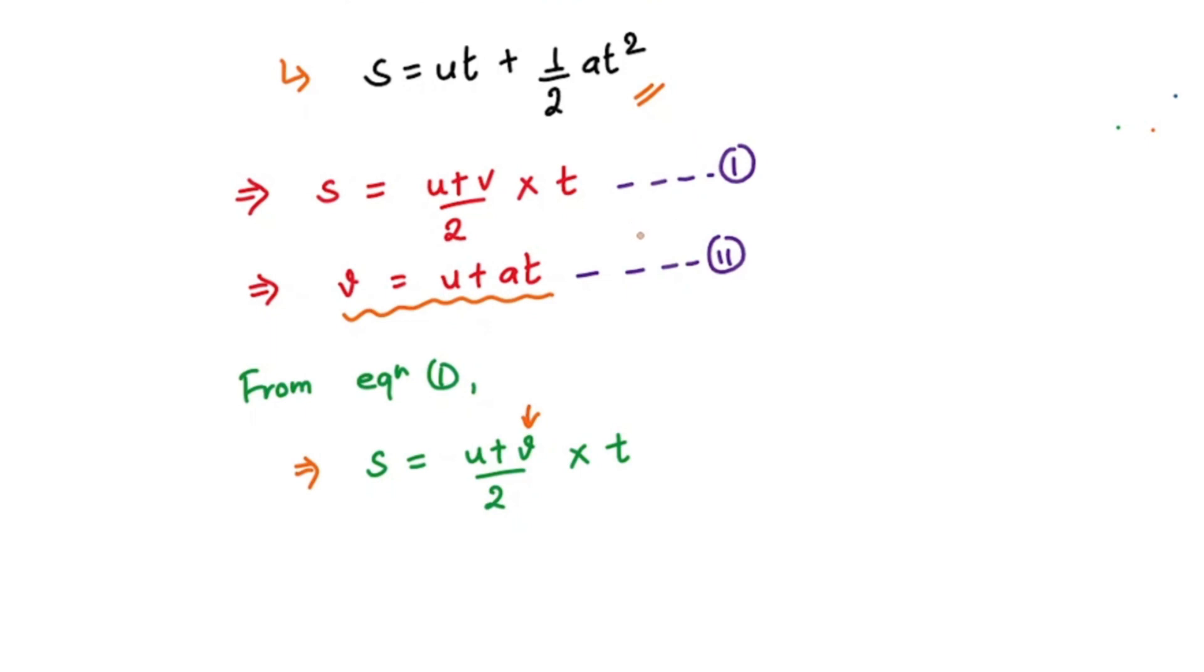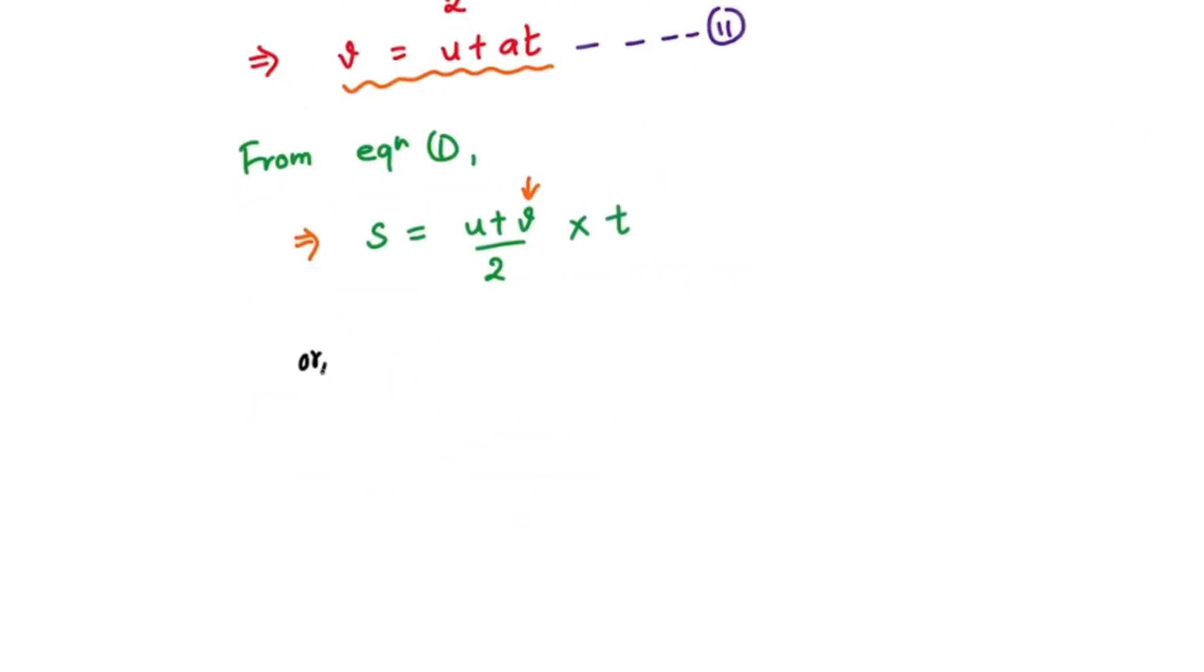Let's see if we'll get our equation by replacing this v with our second formula. So we have s = (u + v)/2 × t. Our v is u + at from the second formula, so I'm going to replace that v with u + at, divided by 2 times t. This is from equation 2.